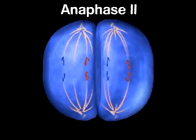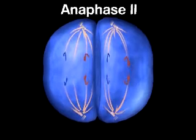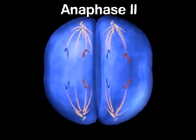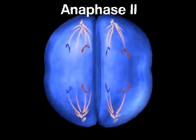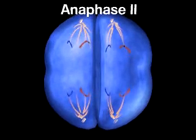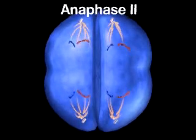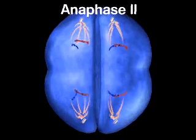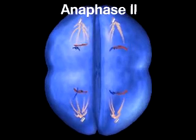Anaphase II begins as the centromere of each chromosome splits, allowing the sister chromatids to separate and move to opposite poles.